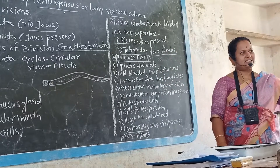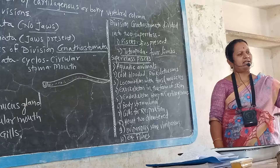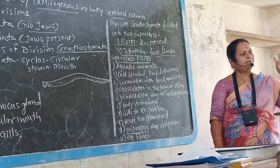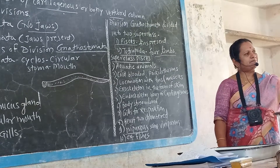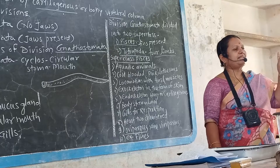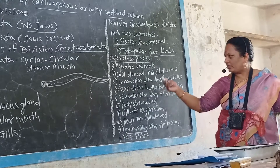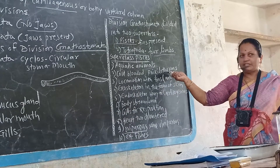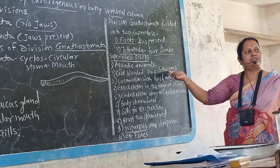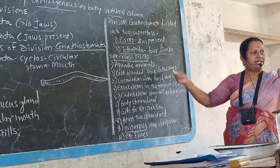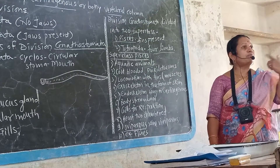The five vertebrate classes are: first, Pisces; second, Amphibia; third, Reptilia; fourth, Aves; and fifth, Mammals. The first three classes — Pisces, Amphibia, and Reptilia — are cold-blooded, classified as ectotherms. Aves and Mammals are warm-blooded.